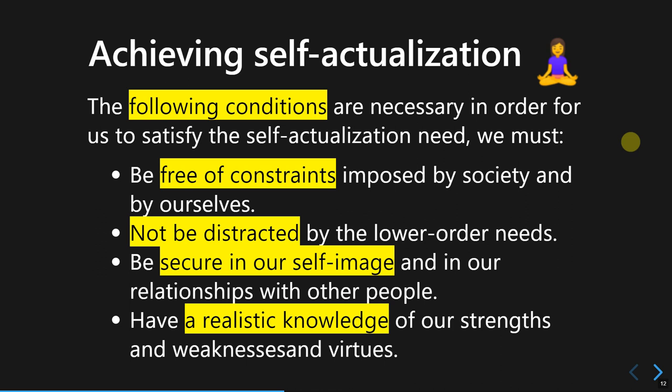The second condition is that we should not be distracted by lower-order needs. Before fulfilling the top of the hierarchy, we need to have at least partially fulfilled the needs at the lower levels, so we're not preoccupied with physiological needs. If at middle adulthood we are still worried about fulfilling physiological needs, it is harder to reach the self-actualization stage.